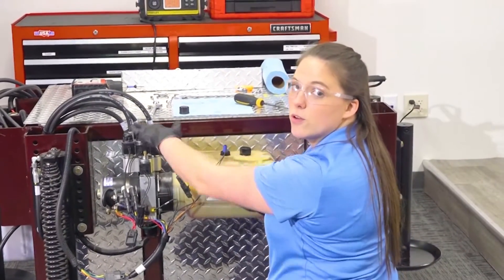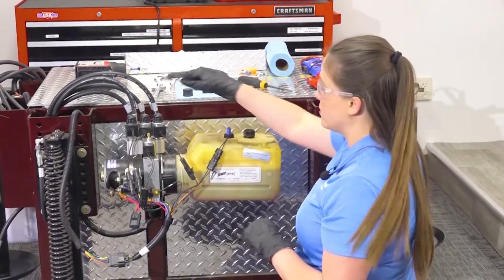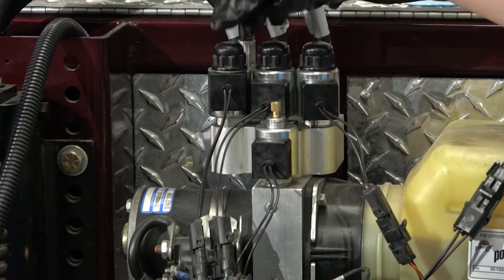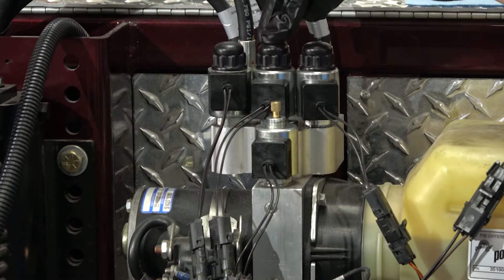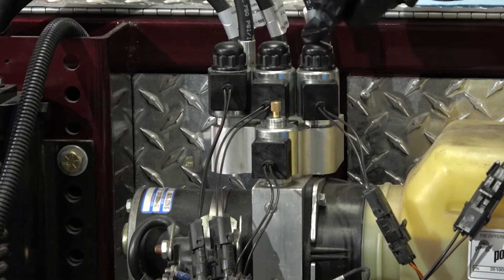The leg valves are marked on the manifold of what jacks they correlate to. This is the front jack, this is the roadside rear jack, and this is the curbside rear jack.